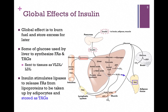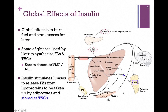The global effect of insulin is to burn fuel and store any excess for later use. Some of the glucose is used by the liver to synthesize fatty acids and triacylglycerols, and this can be sent to tissues as VLDL and LDL, as illustrated here. Insulin also stimulates lipases to release fatty acids from lipoproteins so that they can be taken up by adipocytes and stored as triacylglycerols. Remember, if insulin metabolism is disrupted in any way, we not only affect glucose metabolism, we also affect fatty acid metabolism.